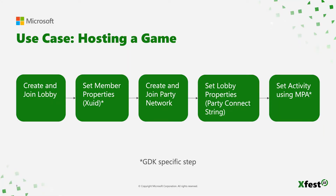To host a game, you first call the create and join lobby function. Once you get back the state change event confirming the lobby has been created, you can start setting member properties — for example, setting the player's zooid as a member property. Next, spin up a PlayFab Party network and set its connection string as a lobby property. Finally, use the lobby's connection string to set an activity using MPA, which allows friends to join your game through the shell.